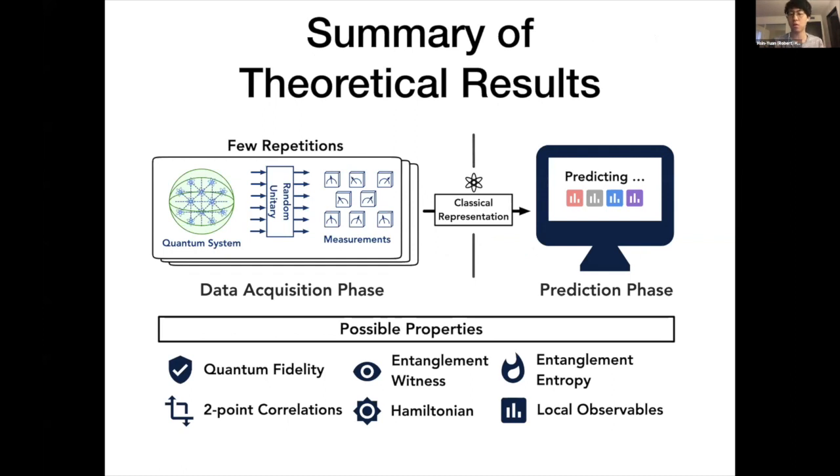Here is a summary of some of the theoretical results that we could show. Not only that, you could also predict things like entanglement entropy, entanglement witness, local Hamiltonian, etc.